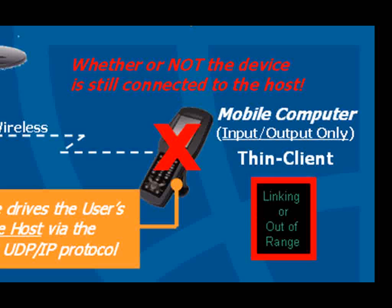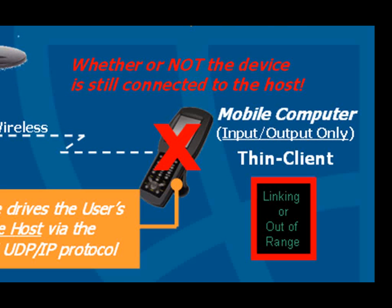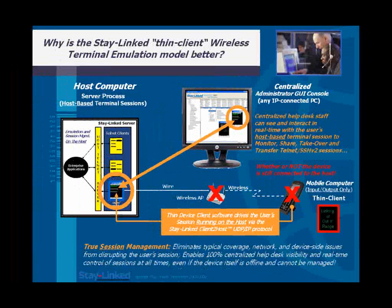Furthermore, with StayLink, as long as there's power on the device, the user will receive a message of either 'linking' or 'out of range.' A linking message indicates that the user is getting onto the wireless network but merely not reaching the host. An out-of-range message indicates that the user has simply wandered out of range or is being prevented from getting onto the wireless network due to some sort of interference. By delineating between these two different types of problems, troubleshooting becomes very simple — the help desk knows with certainty exactly whether it's a network or a coverage problem.